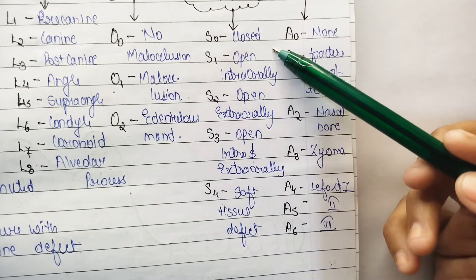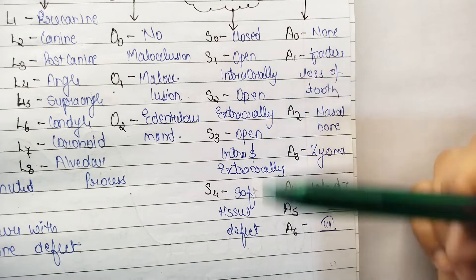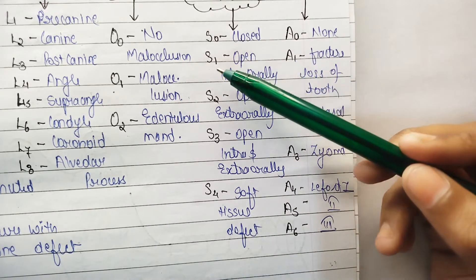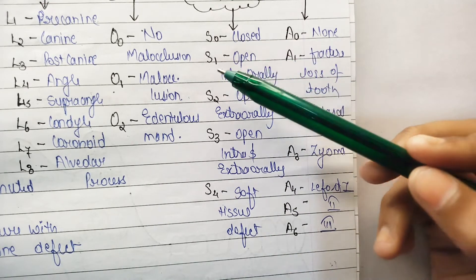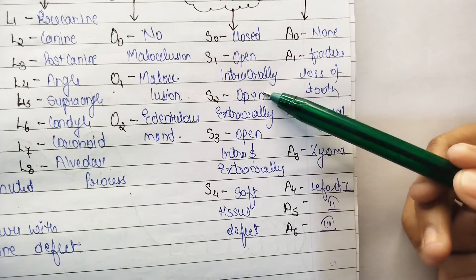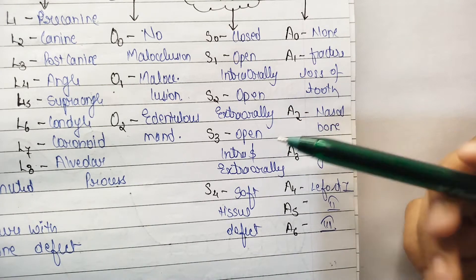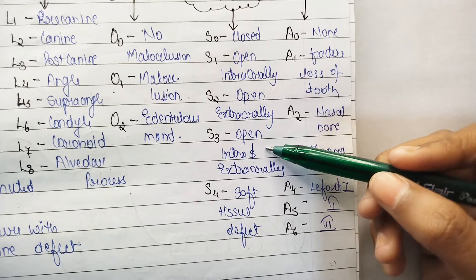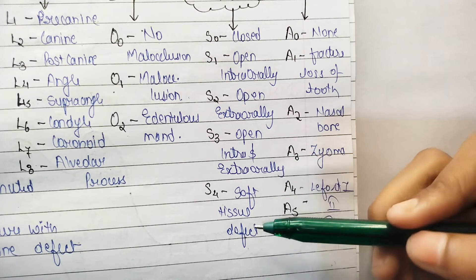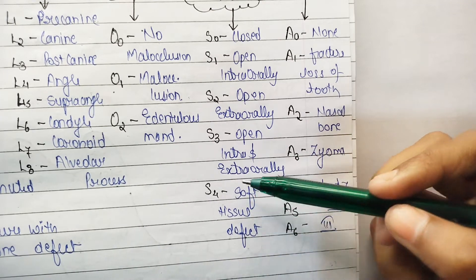S stands for soft tissue involvement. S0 is closed — no soft tissue injury. S1 is open intraorally, S2 is open extraorally, S3 is open both intraorally and extraorally, and S4 is open with a soft tissue defect.